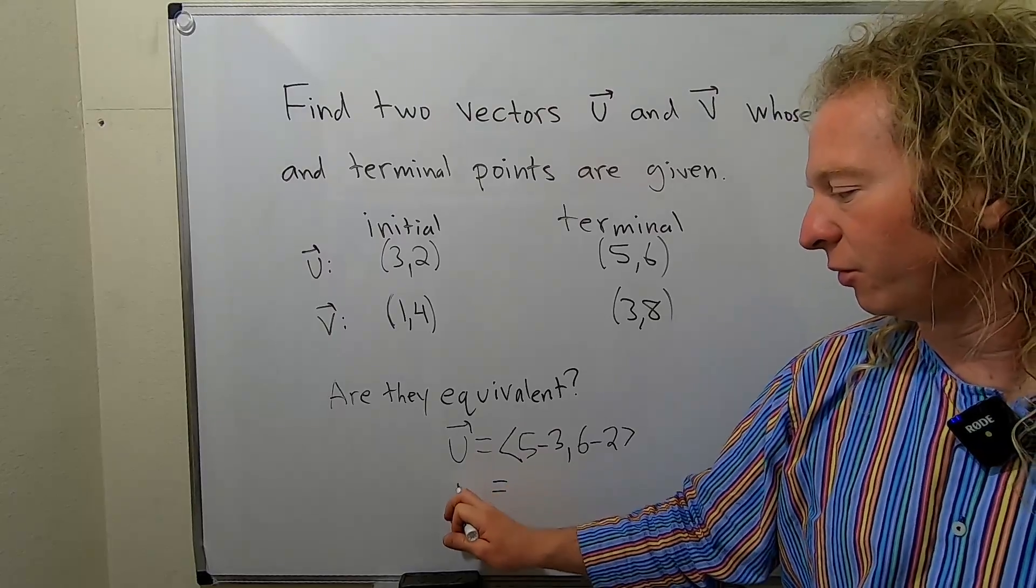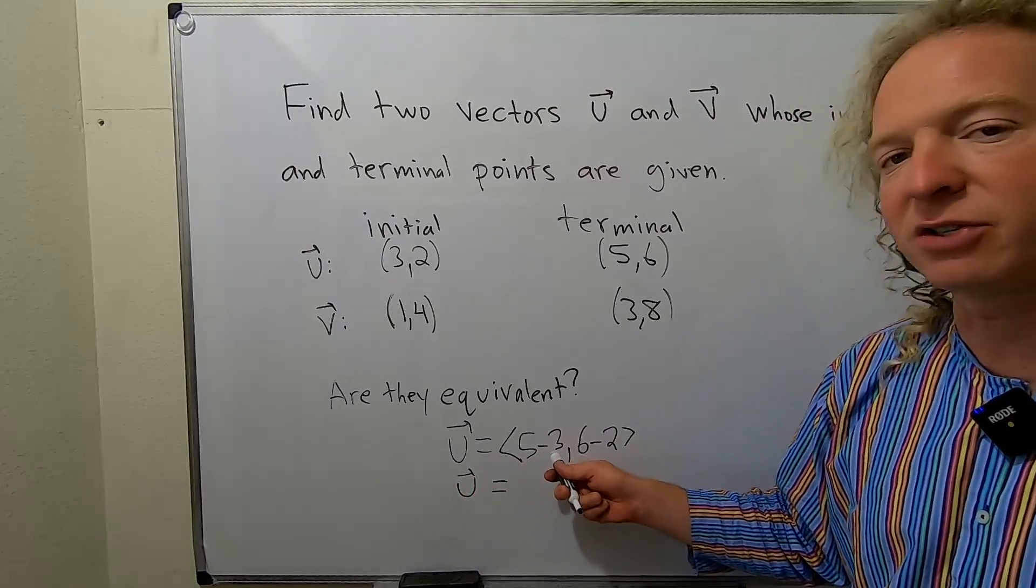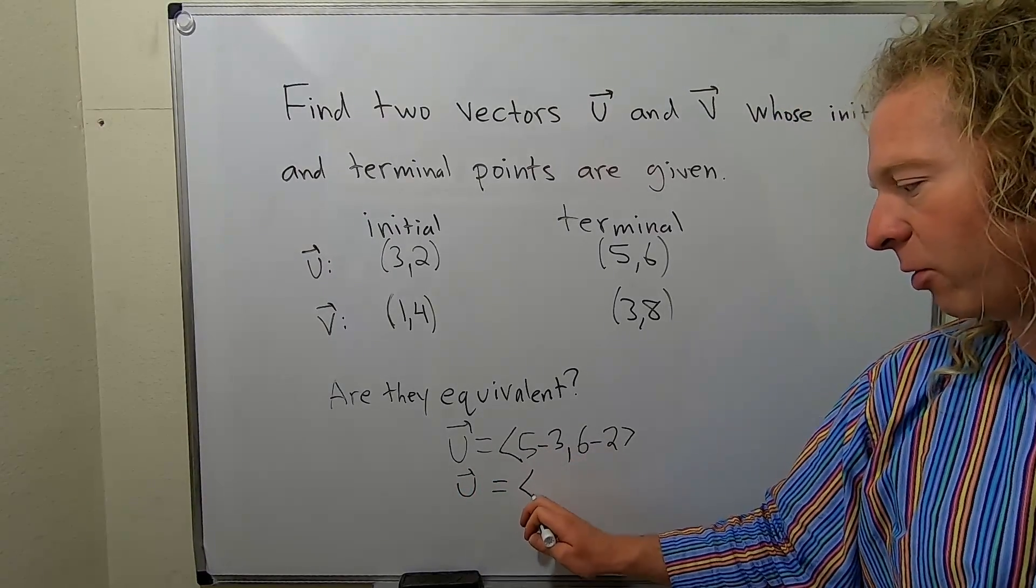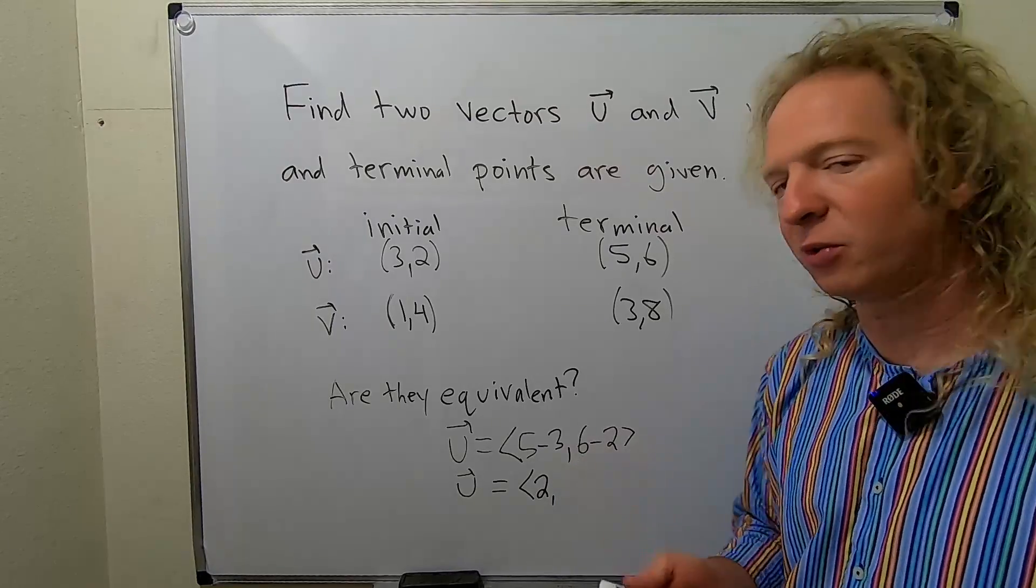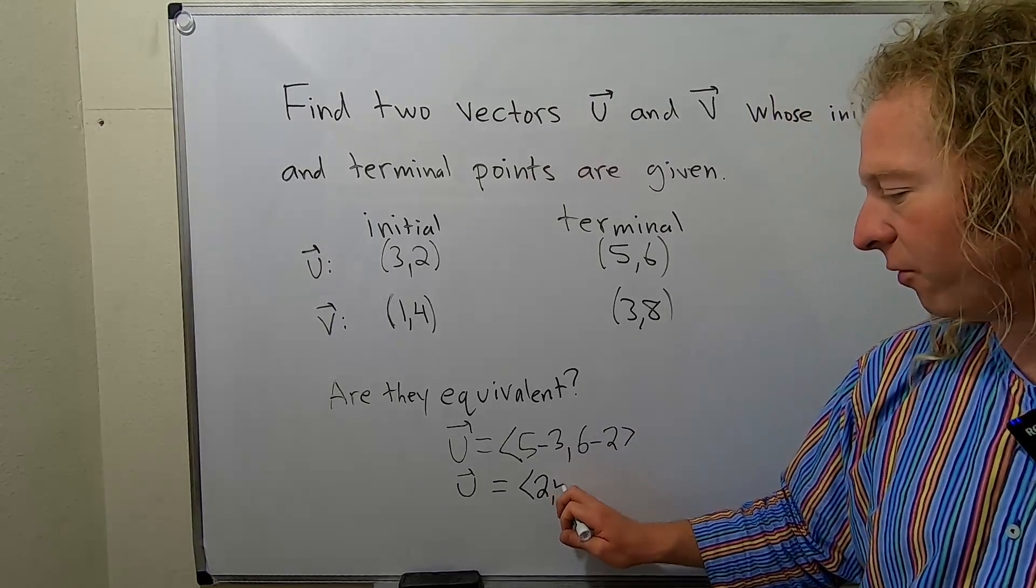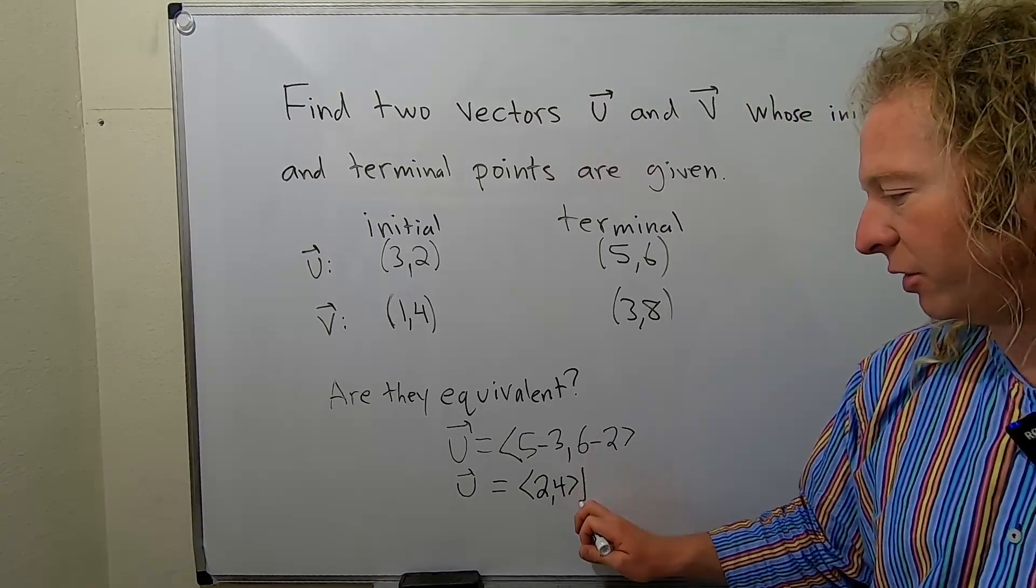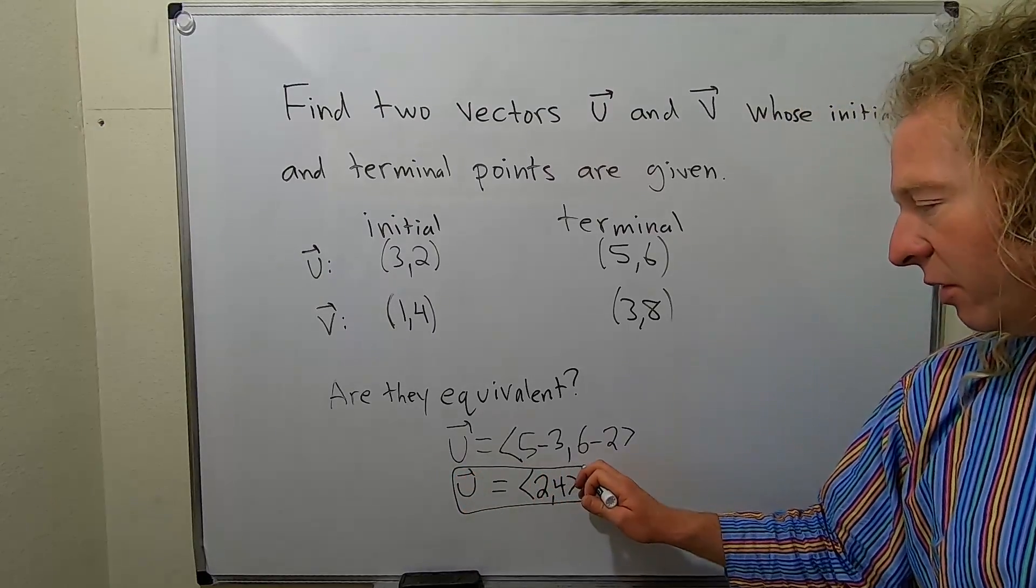So this is equal to, let's see, 5 minus 3 would be 2, so angle bracket 2, and 6 minus 2 would be 4. So 4, and there is our u. So that is our first vector, u.